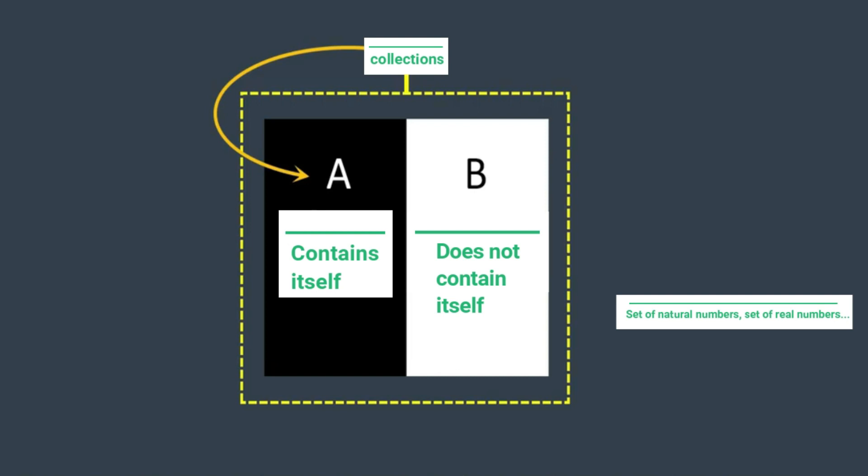Now let's delve into set B, the set that does not contain itself. When we ask if set B contains itself, we encounter a paradox. If set B does contain itself, then by definition it does not. Conversely, if set B does not contain itself, then it does. This paradoxical state, where set B both belongs and does not belong to itself, mirrors the universe's ability to be annihilated into nothingness while simultaneously maintaining its own state.